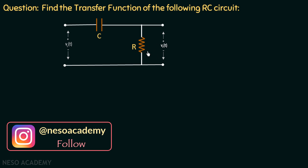If you remember in the previous problem the output voltage was measured across the capacitor, and now we have changed the arrangement so the output voltage is measured across the resistor. We need to find out the transfer function, which is the Laplace transform of output to the Laplace transform of input, assuming all initial conditions equal to zero.